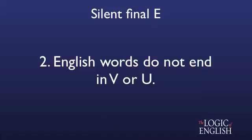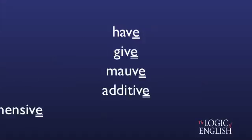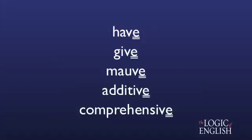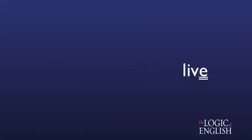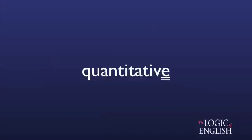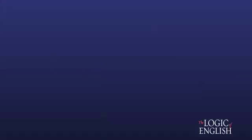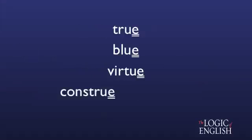The second most common reason for a silent final E is that English words do not end in V or U. So every time you hear the sound V at the end of a word, you need to add a silent final E. This is true for short words like 'live' and big words like 'quantitative.' It's also true for words ending in U.